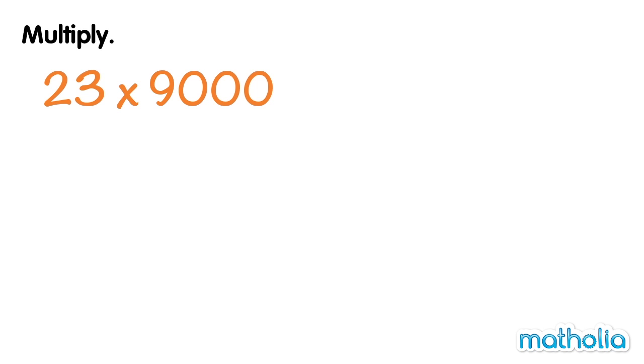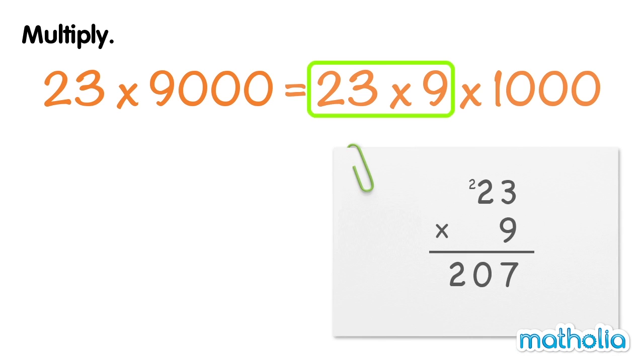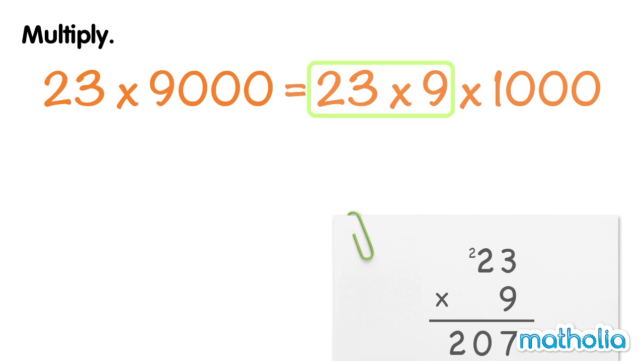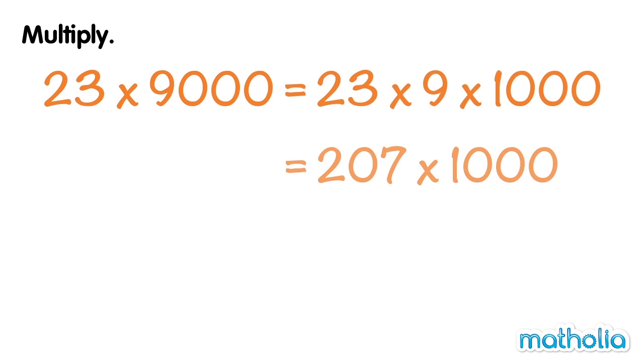So we can write 23 times 9,000 equals 23 times 9 times 1,000. By multiplying in columns, we see that 23 times 9 is equal to 207. 207 times 1,000 equals 207,000.